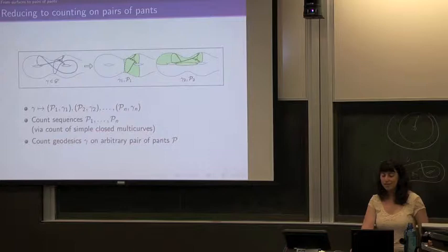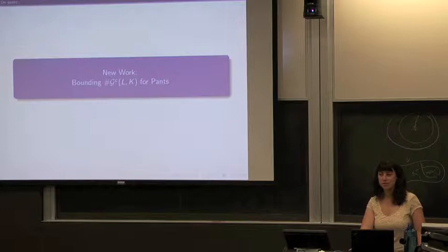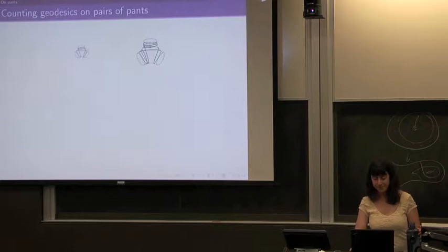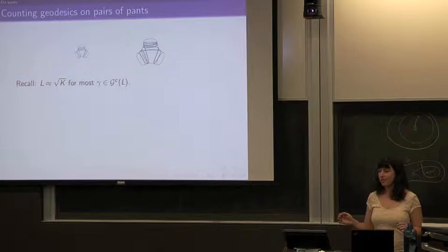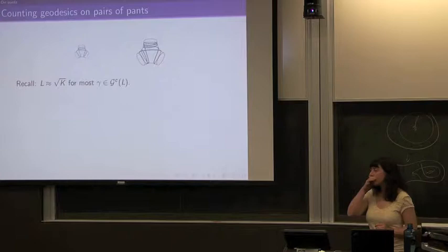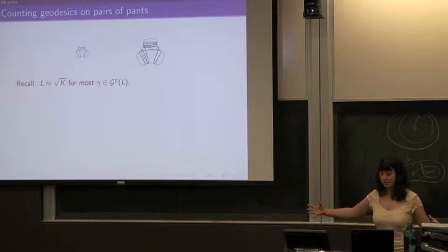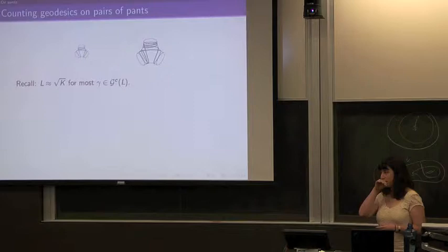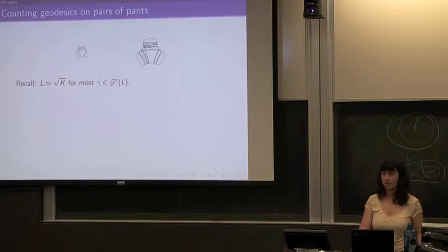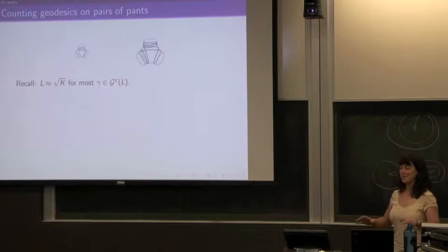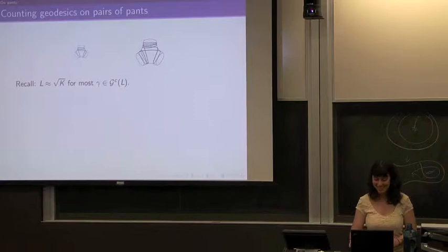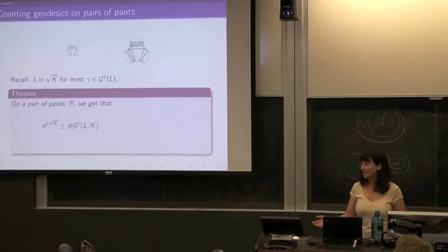Now I'll talk about how to count on a pair of pants. On a pair of pants, we get a lower bound of e^(√K) — that's like a lower bound that matches what we expect — and an upper bound as well. What's going on is that L and K compete for control. The top case happens when K is between L and L², and the bottom case happens when K is less than L². These constants depend only on the geometry — on the lengths of the boundaries. And as the lengths of boundaries go to infinity, these constants go to zero, because with really large boundary lengths it's very hard to close up.